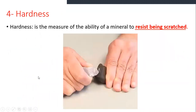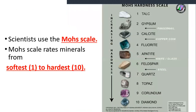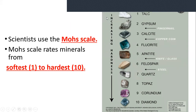Then we move to the fourth method, which is hardness — how much the mineral will resist being scratched. The scientist who created this scale is called Mohs, and he named it the Mohs hardness scale. This scale shows minerals from 1 to 10, from the softest represented by 1 to the hardest, which is diamond at number 10. We use this scale to identify the hardness of different minerals by using the hardness of another mineral.